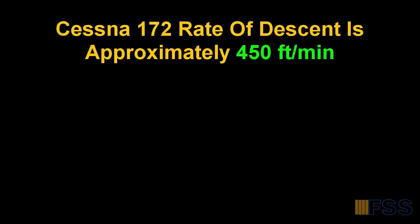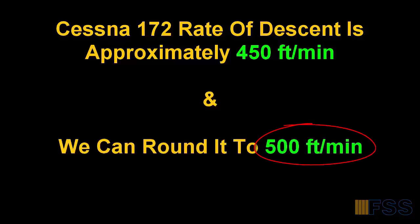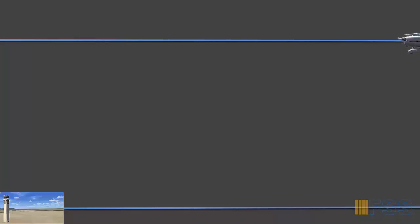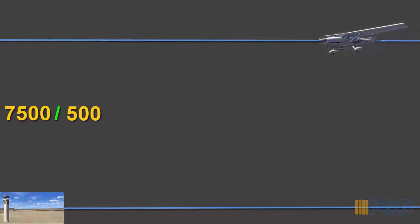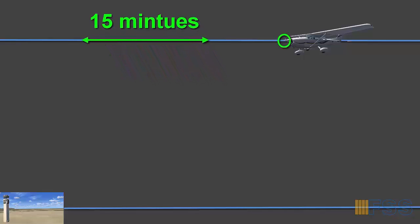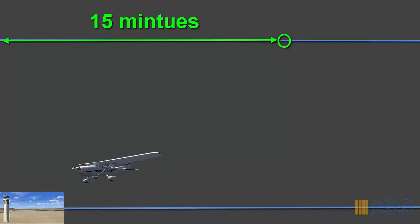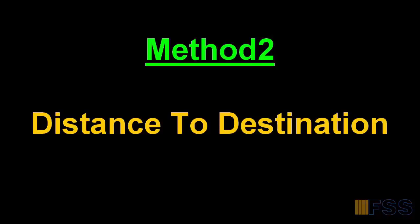Taking the Cessna 172 rate of descent of approximately 450 feet per minute, I'll round it to 500 to make the mental math easier. To find the time required to fly the enroute descent, we divide the altitude to be lost — 7,500 feet — by the rate of descent — 500 feet per minute — and we get 15 minutes. So we're going to start our descent at least 15 minutes before reaching our destination.